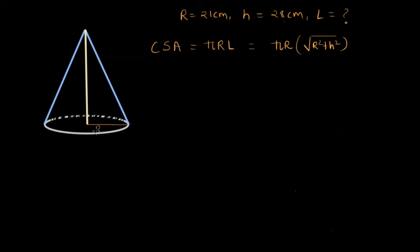The radius is 21 centimeters, the height of the cone is 28 centimeters, and the slant height is unknown. Now let's see how we can find the surface area.